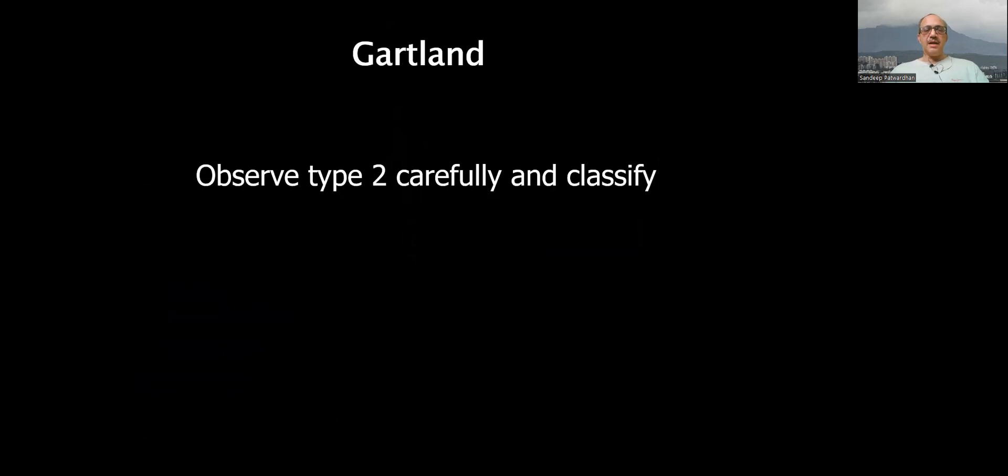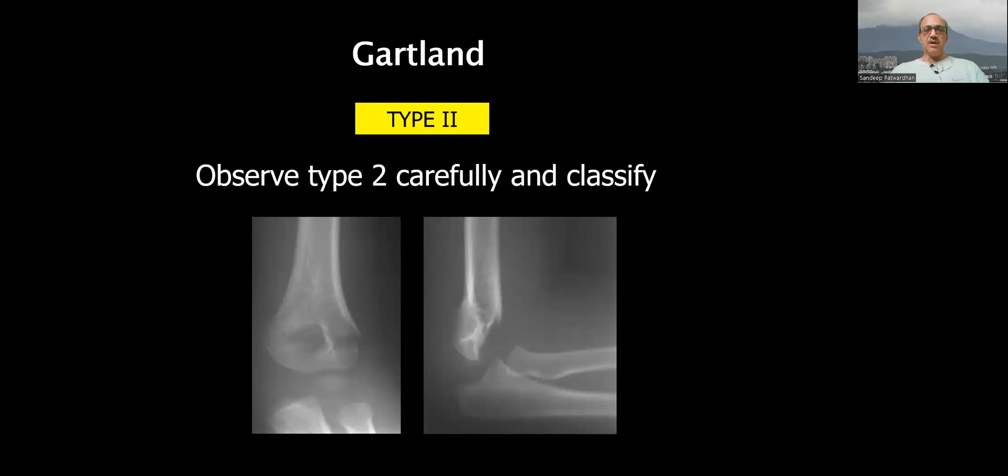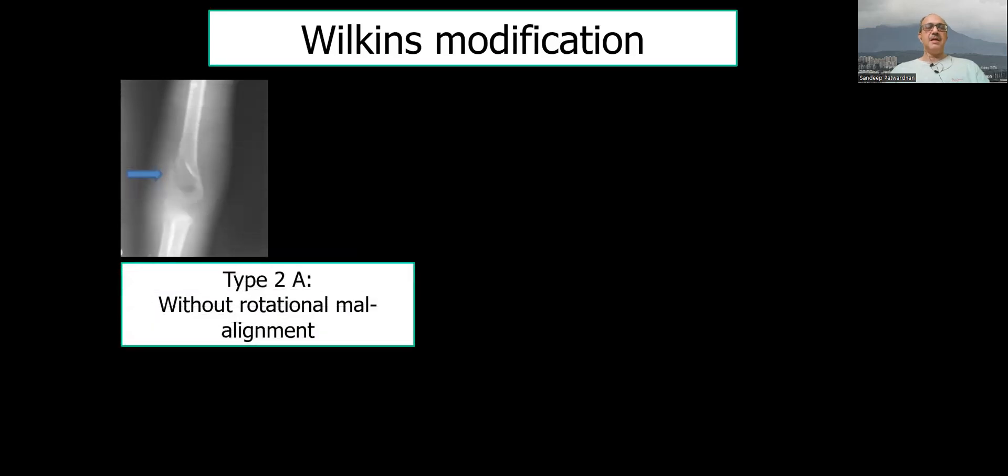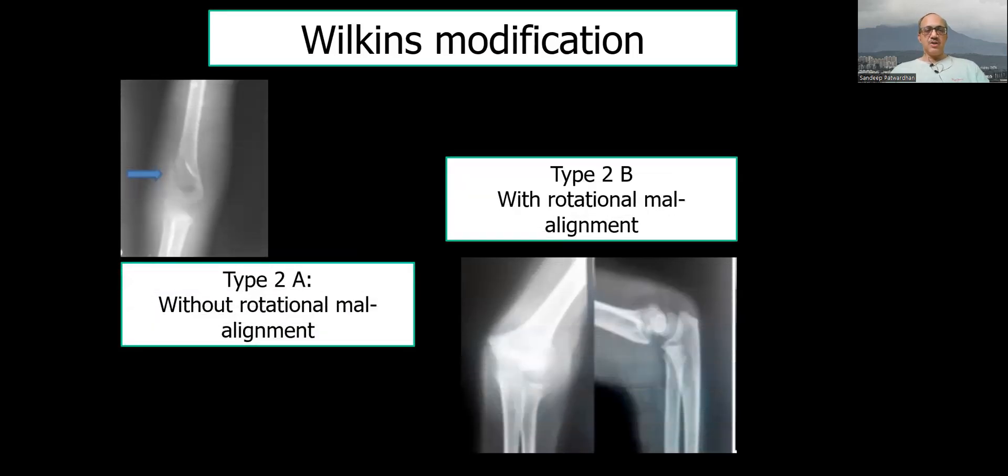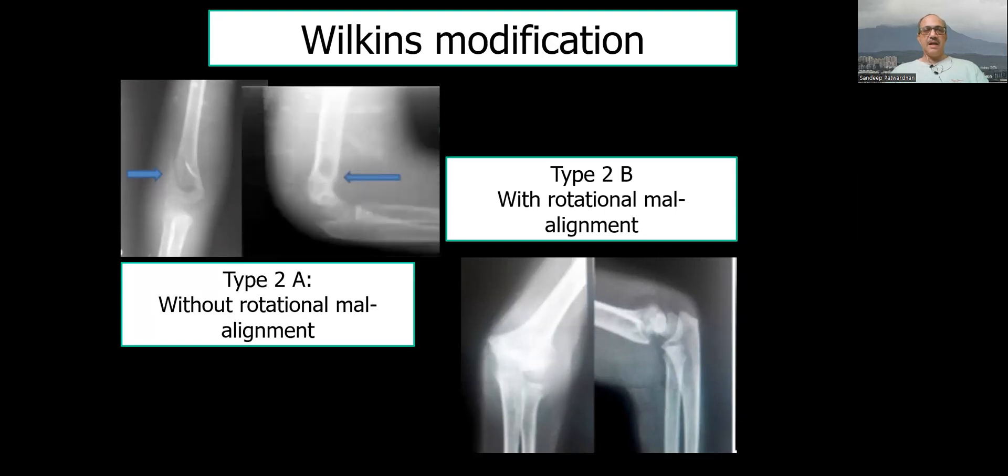Type 2 need to be again carefully assessed and classified as rotationally stable or rotationally unstable. The posterior hinge may be intact but there may be a discrepancy in rotation. So the type 2a is without rotational malalignment. Type 2b is with rotational malalignment.